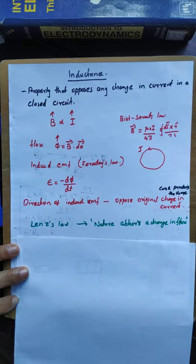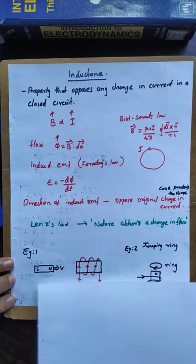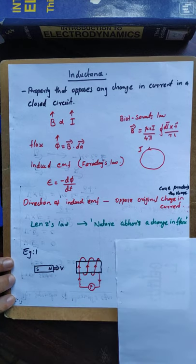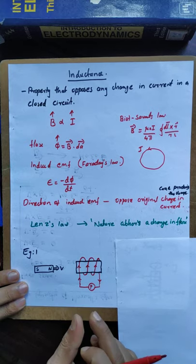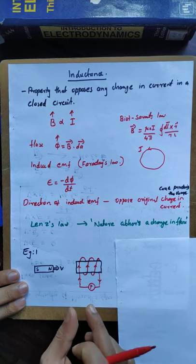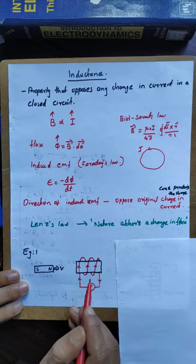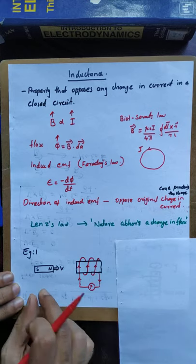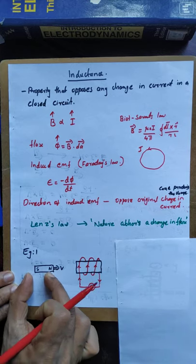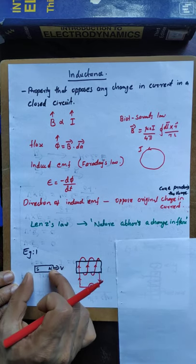That property is called inductance. Let's take two examples. First example: Faraday's original experiment. There is a current-carrying loop with a current meter. There is a bar magnet moving toward it with its North Pole at velocity v.